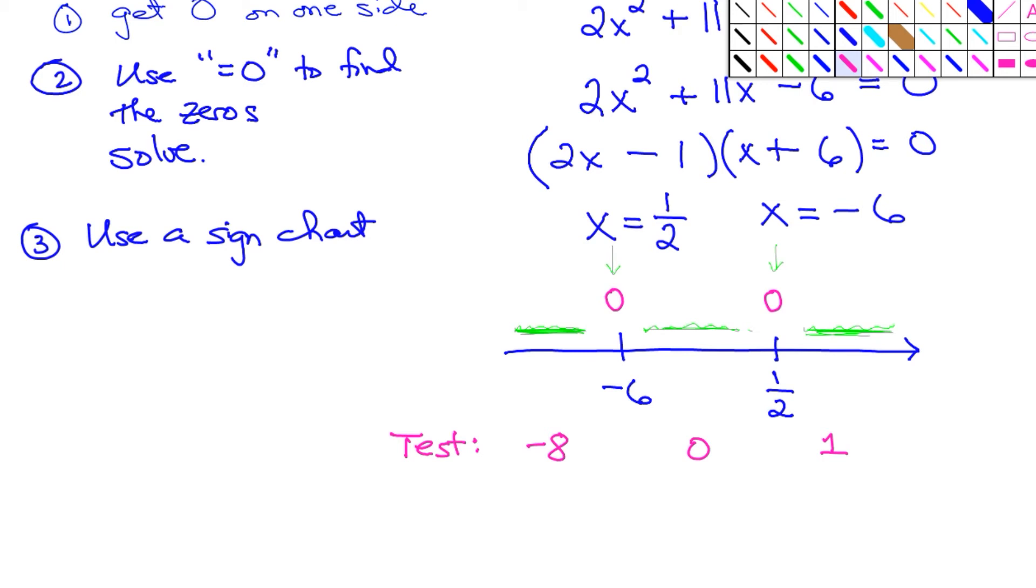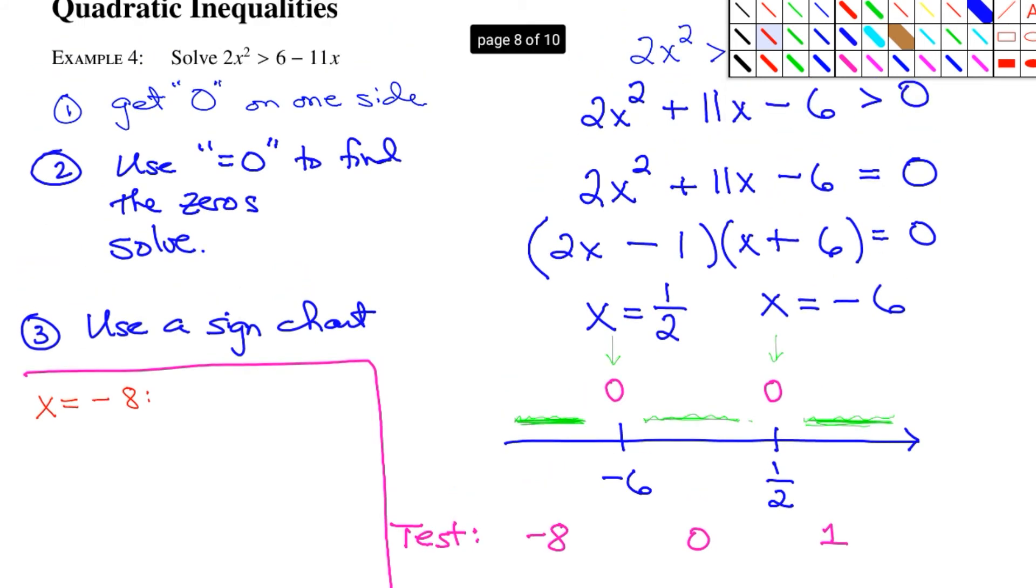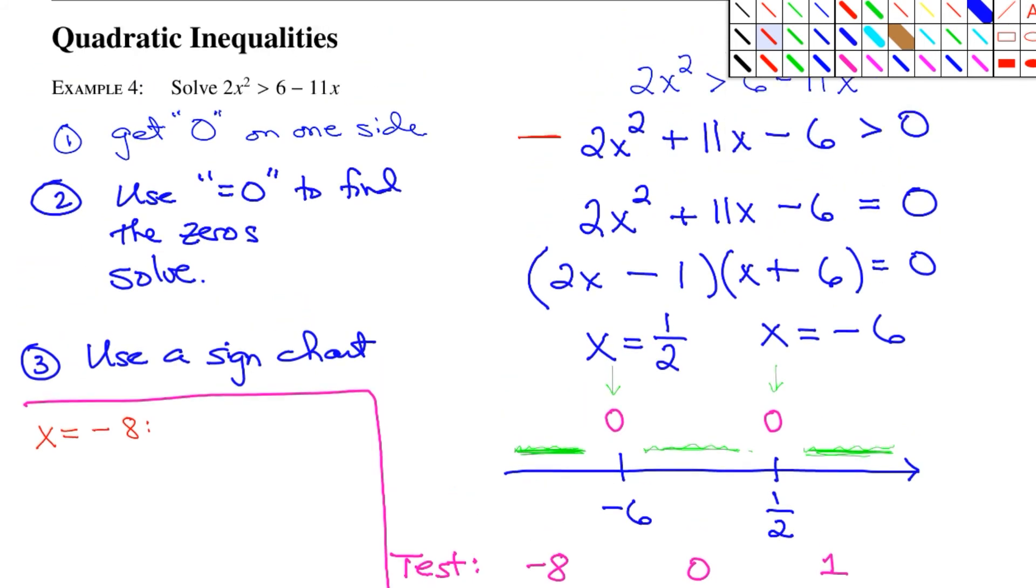All right, let me do my testing right over here in red. So if I test when x equals -8, you have to test it in the polynomial that is set up with the zero on one side. If I go back here, you can see that would be this polynomial here.